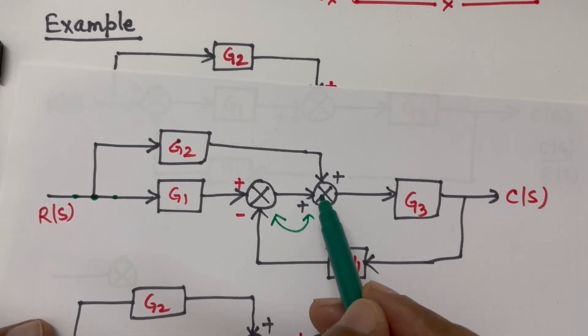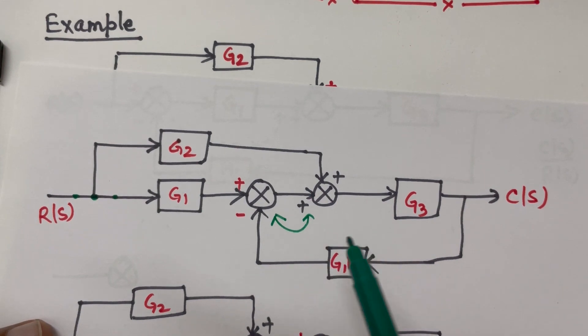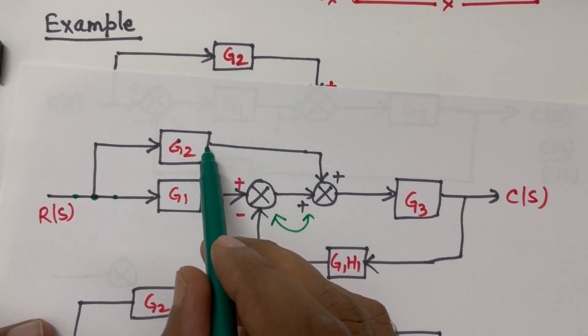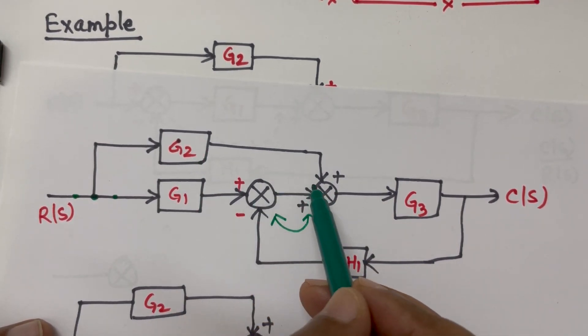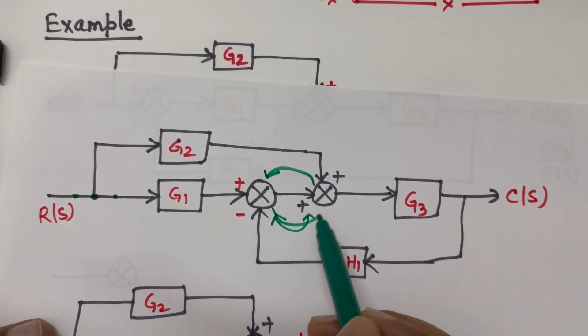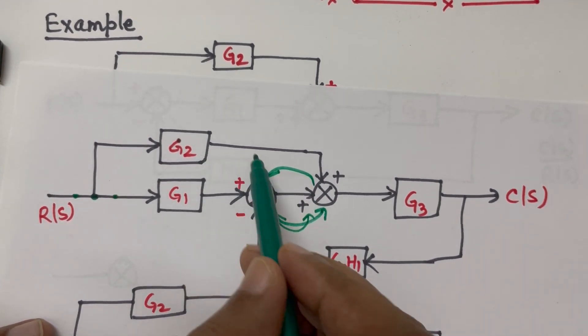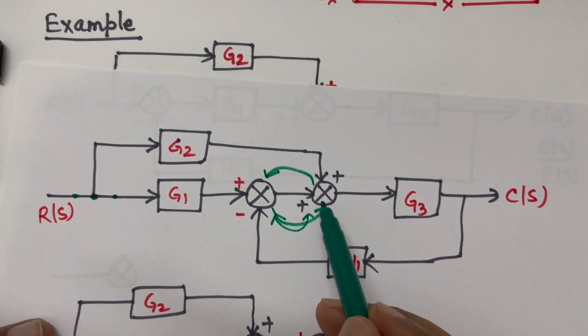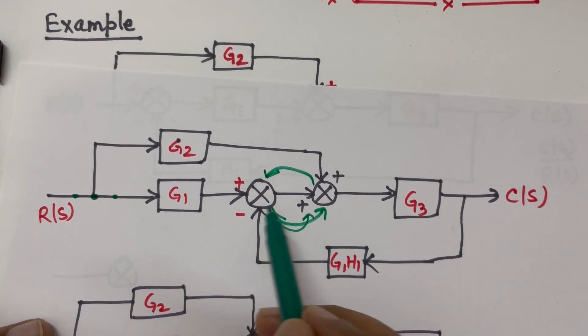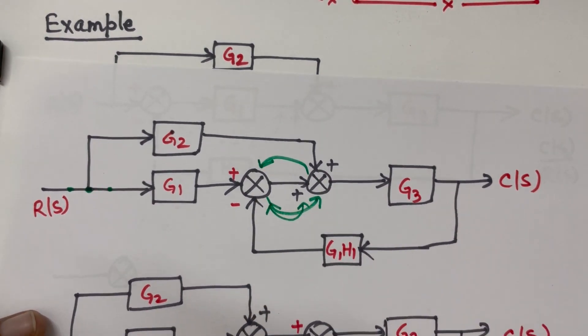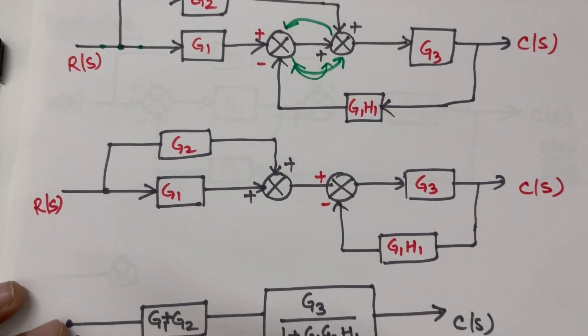So whenever the summing points we are interchanging, the entire thing will be interchanged. This G2 will end to this one, we will shift here and this summing point will shift here. So G2 will end over here and G1 H1 will end over here. And that will become negative here, it will be positive.